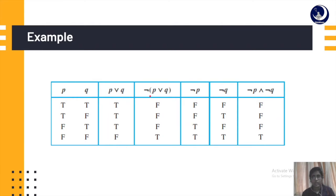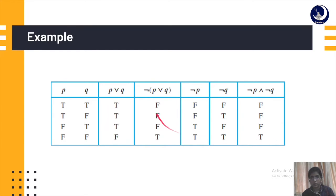When the truth values under two compound propositions are the same — for example, this compound proposition and the compound proposition 'not p and not q' produce the same values — then we can say that the negation of the whole of p or q is equivalent to not p and not q.